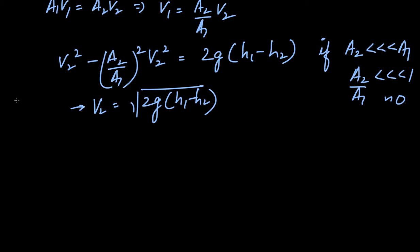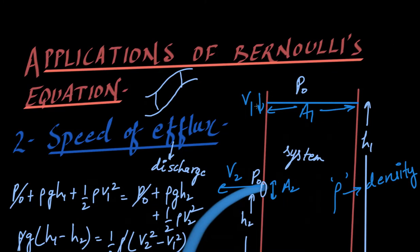This equation is also called Torricelli's theorem. After finding v2, I can also find the discharge rate, which is a2 times v2. One very interesting point to note: if you drop a particle from rest through a height of (h1 - h2), the speed it gains is also √(2g(h1 - h2)). So the speed with which the water comes out is the same as the speed a freely falling particle would gain over that same height difference.